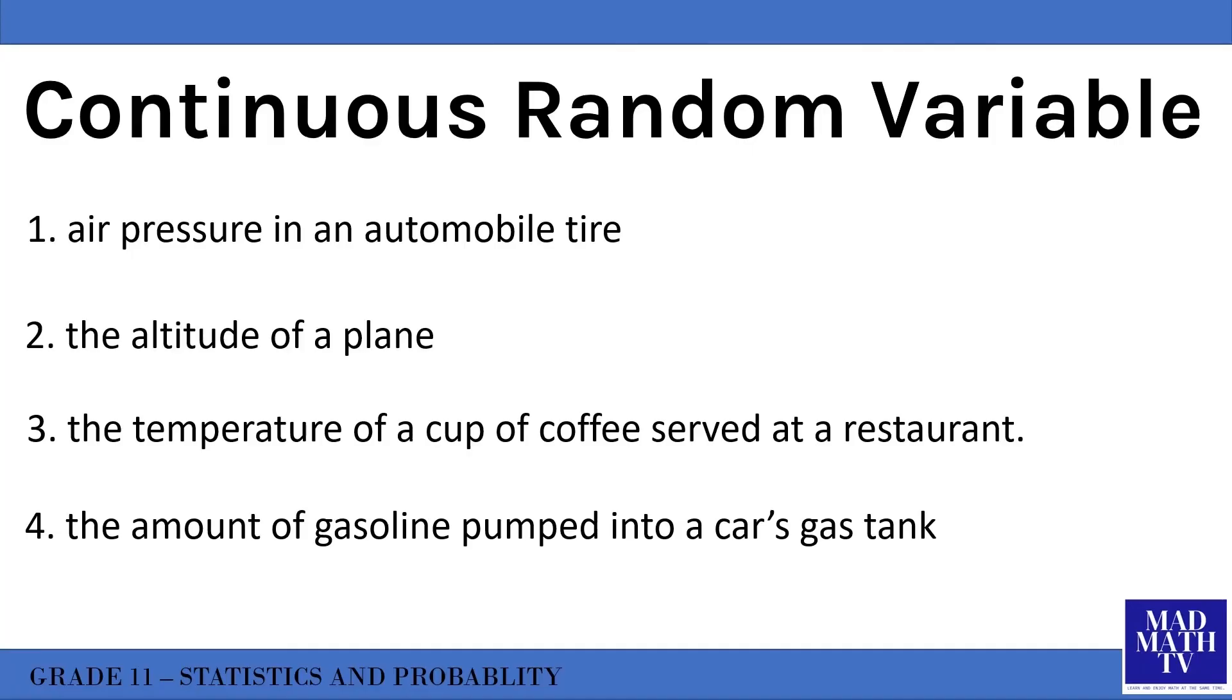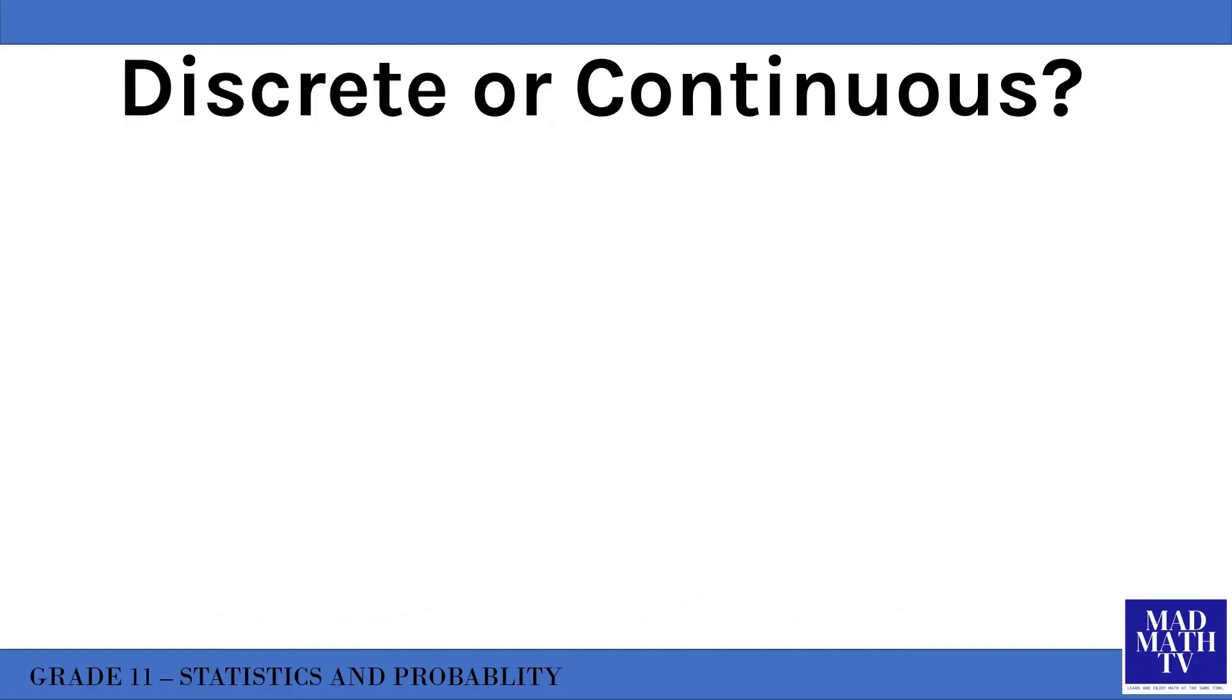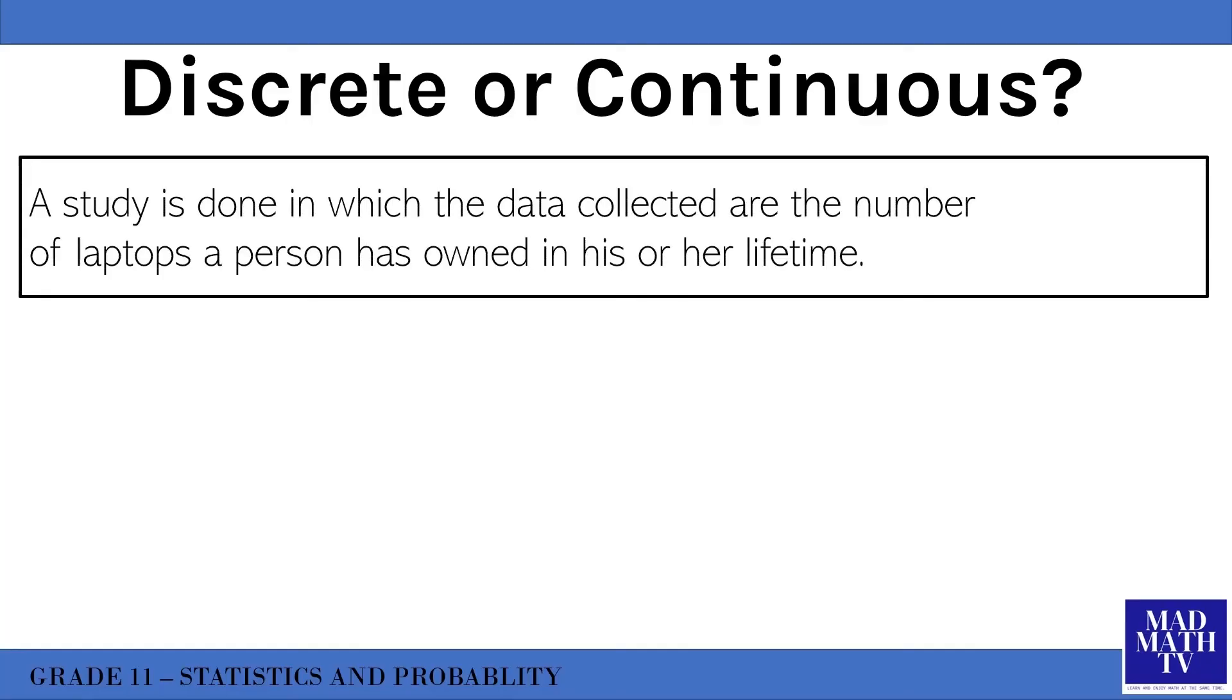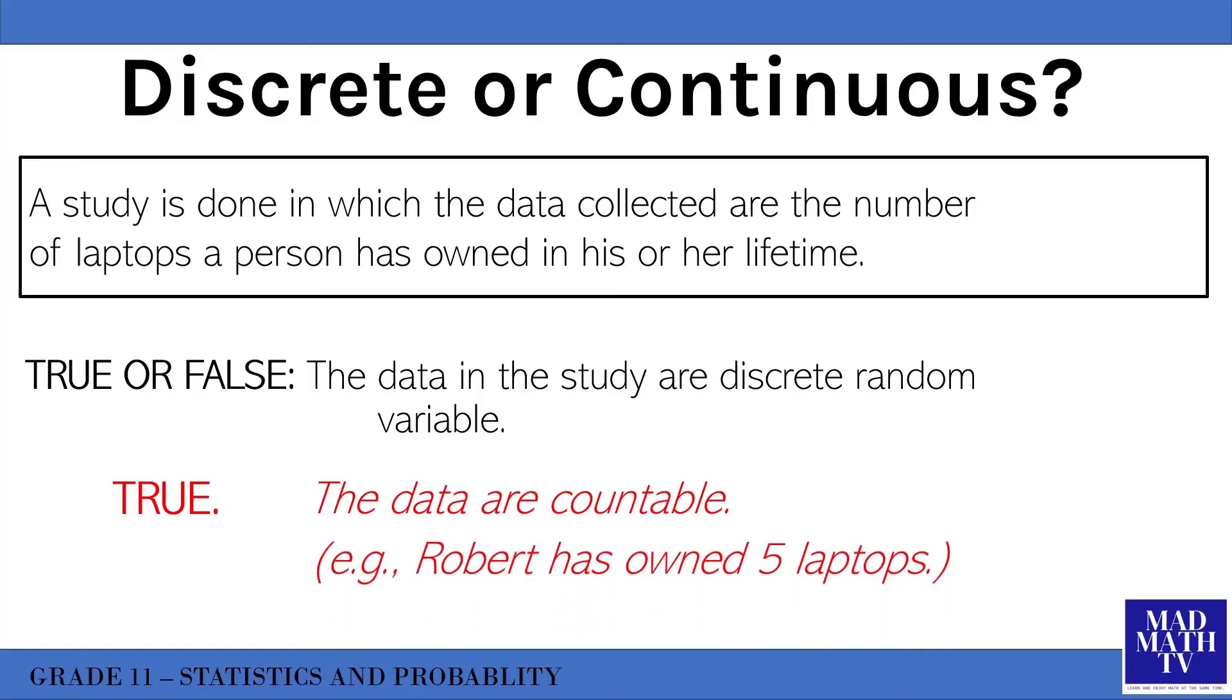Now let's try to answer the following questions to check your understanding. A study is done in which the data collected are the number of laptops a person has owned in his or her entire lifetime. Is it true or false that the data in the study are discrete random variables? The answer is true. The data are countable - you can count laptops. You could have 5 laptops, 7 laptops, but you cannot have 3.72 laptops. Robert has owned five laptops - that's an example.